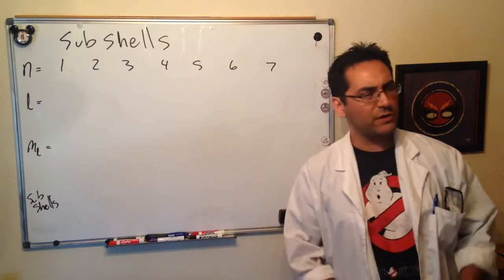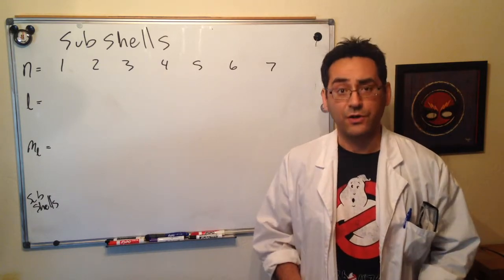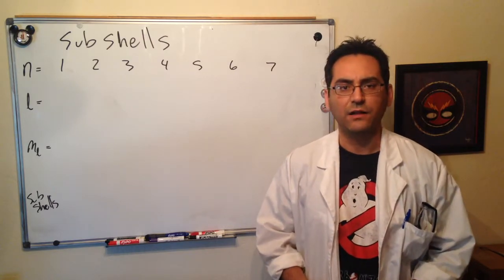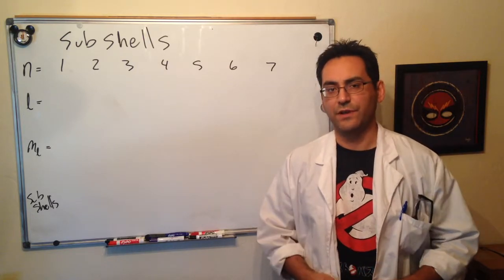Welcome back to KM101. In the last video we looked at quantum numbers, how to determine what their values are. Given values of n, how do we find out the value of l? Given l, how do we find ml? So if you don't know that, take a look at the previous video.